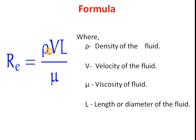From this formula, the Reynolds number is directly proportional to the density of the fluid — higher density means higher Reynolds number. It is also directly proportional to the velocity of the fluid — higher velocity means higher Reynolds number — and directly proportional to L, the length or diameter of the pipe. A larger diameter pipe gives a higher Reynolds number.